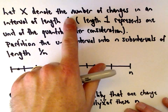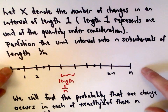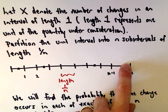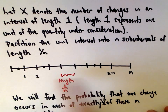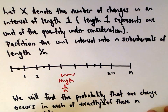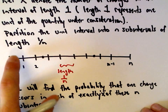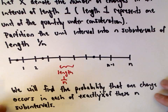We're going to let x denote the number of changes in an interval of length 1. That interval of length 1 represents the quantity under consideration. What we're going to do is partition that unit interval into 1, 2, 3, up to n subintervals of equal length 1/n. Then we'll find the probability that one change occurs in exactly x of these subintervals.